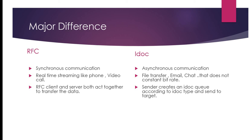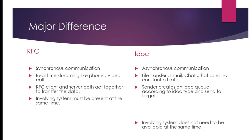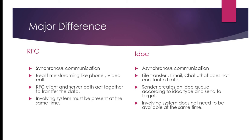With IDoc, the sender first creates an IDoc queue according to the IDoc type. You need to define the IDoc type — meaning what kind of data structure you want. The sender then sends the data in terms of a queue, and the target system receives that data later. With RFC, the sending and receiving systems must be present at the same time, whereas with IDoc they do not need to be.